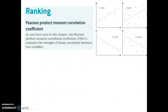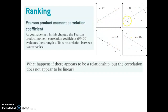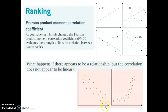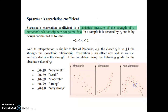So when we are using the Pearson Product Moment Correlation Coefficient, it works for linear data. However, what happens if there appears to be a relationship but the correlation does not appear to be linear? For example, one dataset is linear, but another is not — yet the nonlinear one seems to show a stronger relationship with less spread. The answer to that question is Spearman's correlation coefficient.